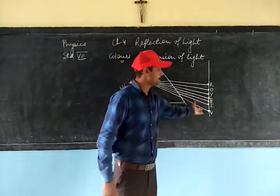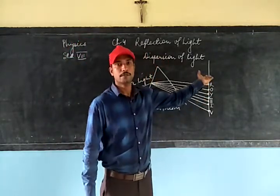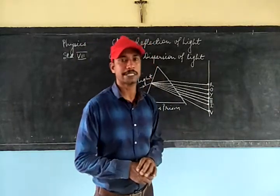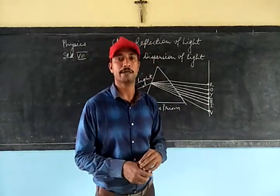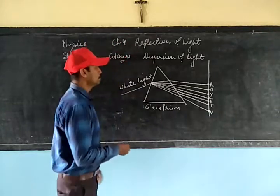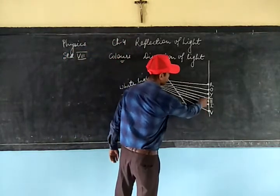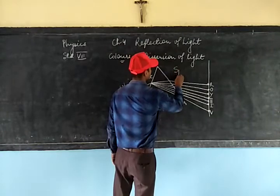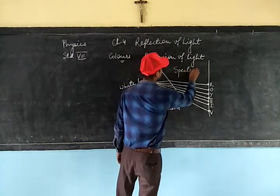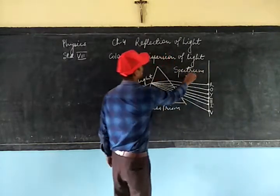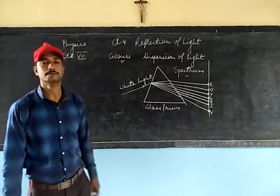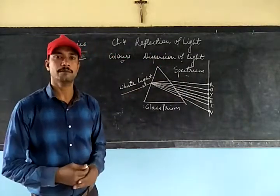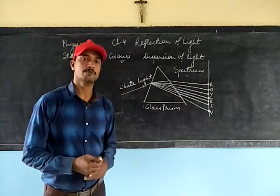The seven different bands of colors — the spread of colors that can be obtained on the screen — is called the spectrum. This is called spectrum. This is a small topic we have discussed today.